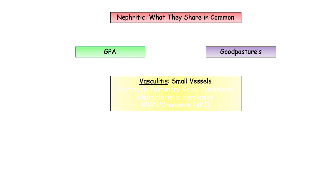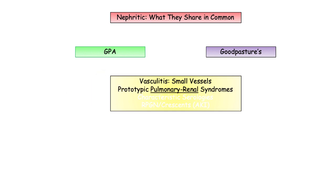Let's highlight the features that GPA and Goodpasture's share in common. They are both classified as a small vessel vasculitis. They both represent prototypic pulmonary renal syndromes, so you can anticipate pulmonary involvement in the majority of vignettes. They both have characteristic, albeit unique, serologic markers that will be the target of inquiry. And although not a requirement, they most often present as the prototypic disorders causing rapidly progressive glomerulonephritis — more so than other primary glomerulopathies.